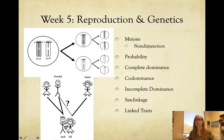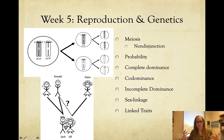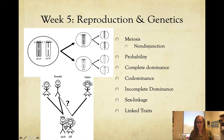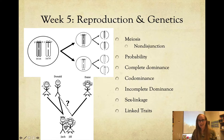Week five was all about reproduction and genetics. We went through meiosis, did the Jack and Jill activity in lab, and talked about non-disjunction events and homologous chromosomes. We covered all the genetics using probabilities: complete dominance, autosomal dominant/recessive patterns, co-dominance like blood types, incomplete dominance where red and white give pink, sex-linked traits like color blindness and male pattern baldness, and linked traits on the same chromosome that get inherited together.